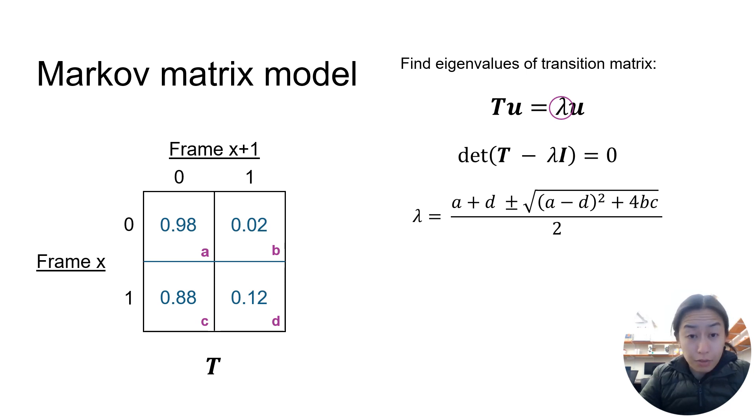Essentially, we want to know how large the off-diagonal entries are compared to the diagonal ones. The larger b*c are in this equation, the bigger the difference will be between the two solutions of λ, and so our metric is then defined as the ratio of the two eigenvalues.